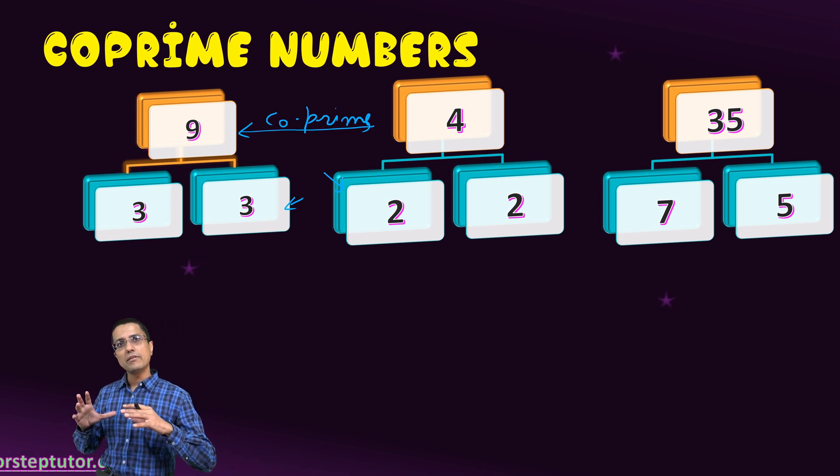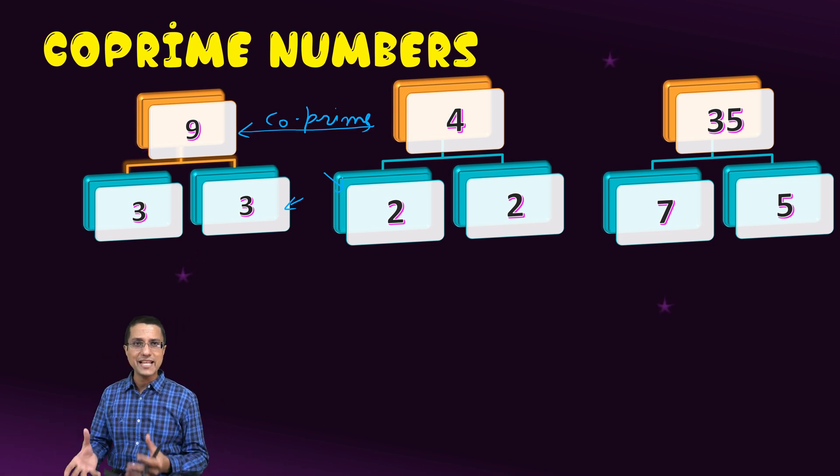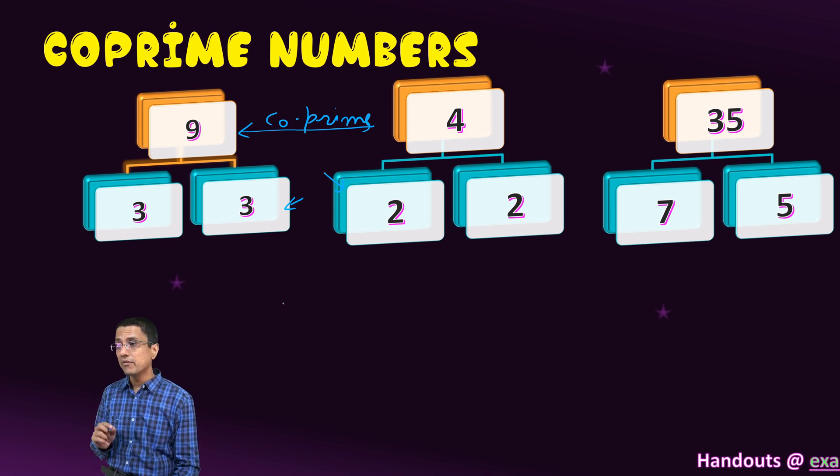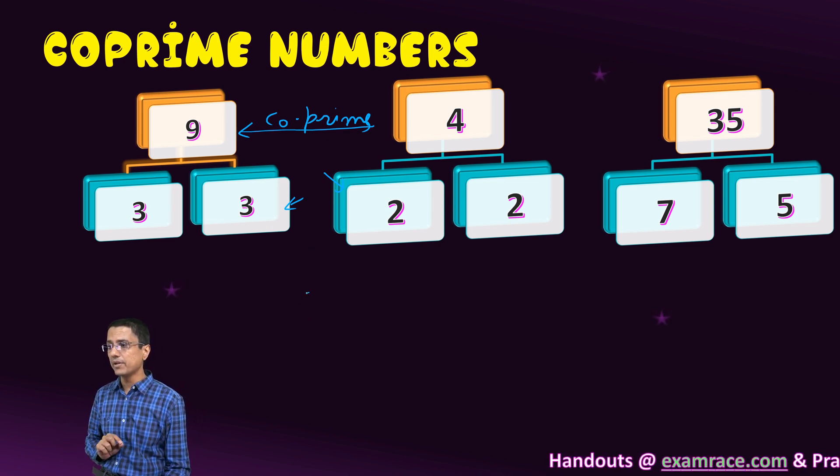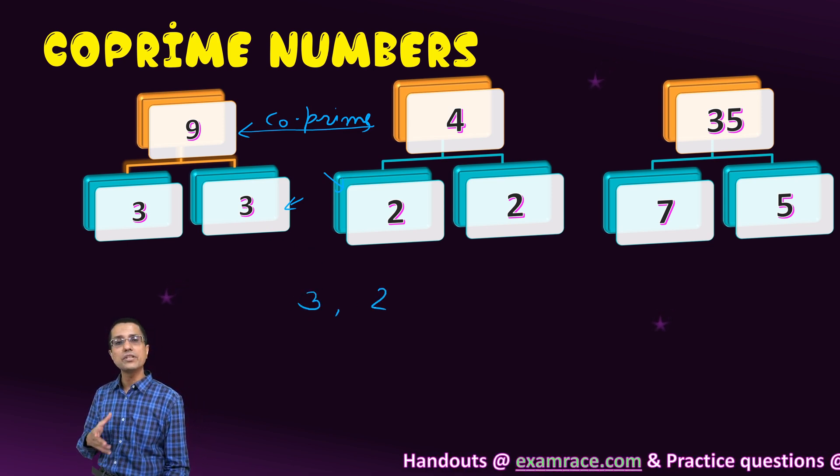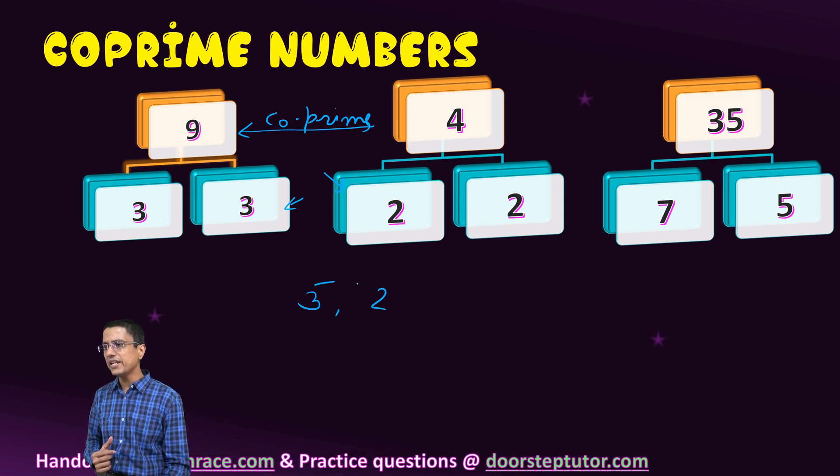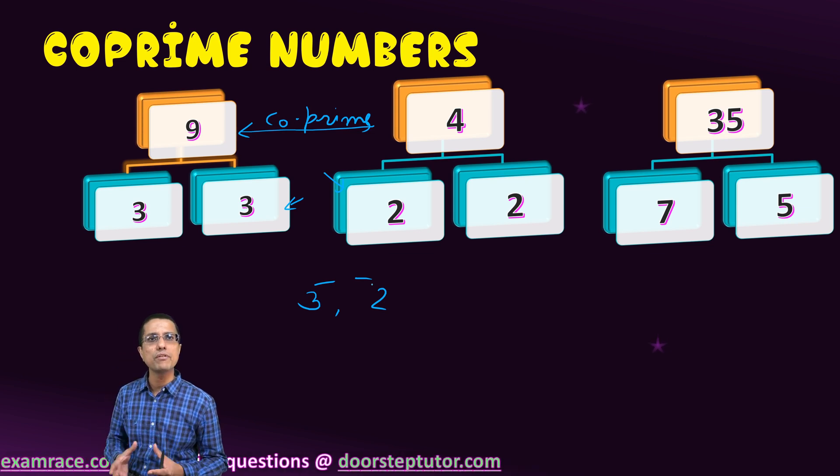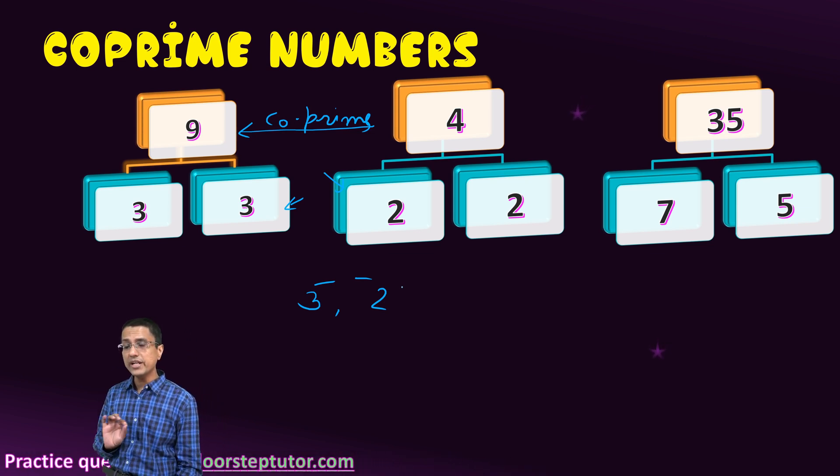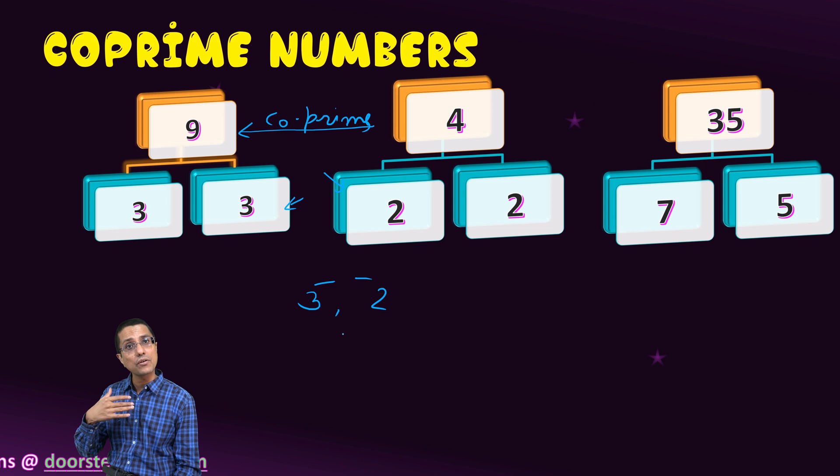Using the same terminology, using the same understanding, we can conclude that all prime numbers, for example 3 and 2, they are co-prime. They are naturally co-prime because between these numbers 3 and 2, I cannot find any common factor except one. So 3 and 2, all the prime numbers are co-primes.